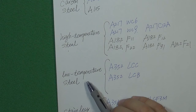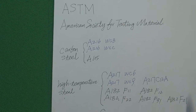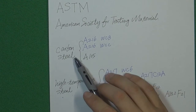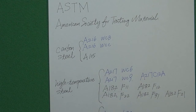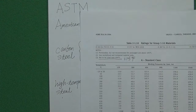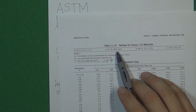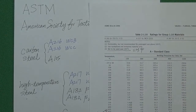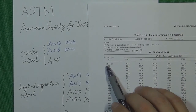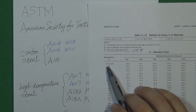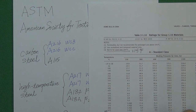Before we talk about the low temperature steel, let's look at what is the minimum temperature for carbon steel and the high temperature steel. According to the standard ASME B16.34, the high temperature steel, for example the WC9, this kind of material can only work in a minus 29 Celsius degree environment, which equals minus 20 Fahrenheit degrees.